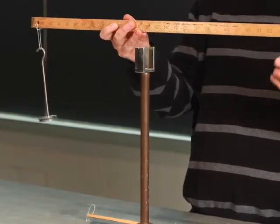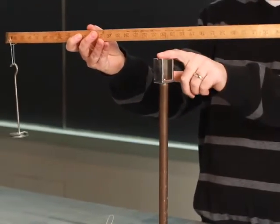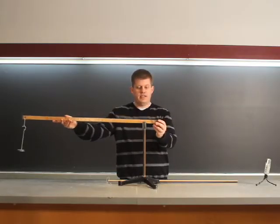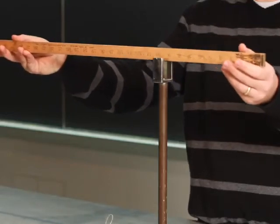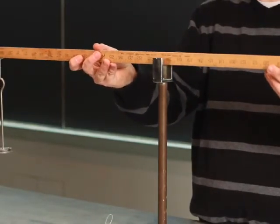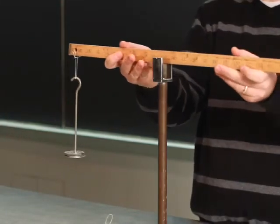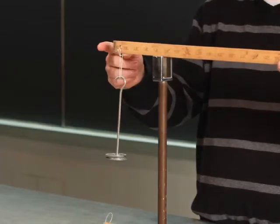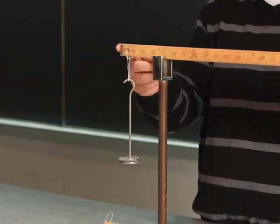The question is, where do I need to put the meter stick on this balance point in order for it to remain level? Do I want to have it 10 centimeters from this end, 25 centimeters from this end, right in the middle at 50 centimeters? Do I want to place it 25 centimeters from this end, or 10 centimeters from this end?